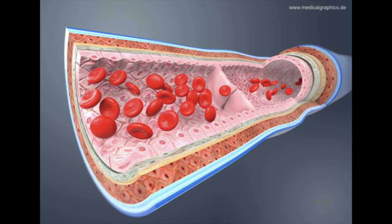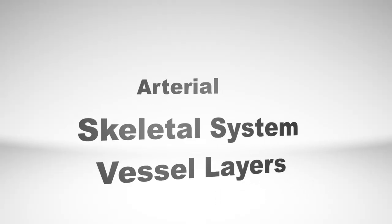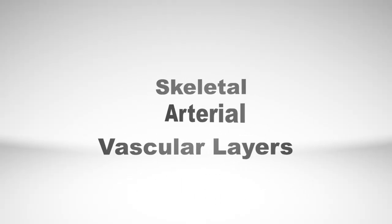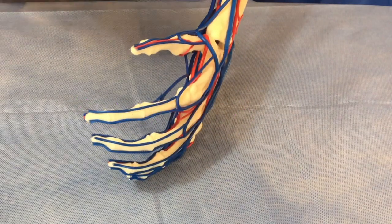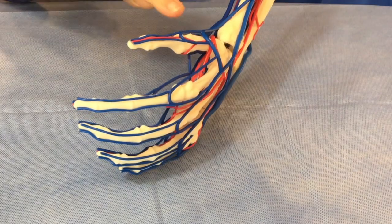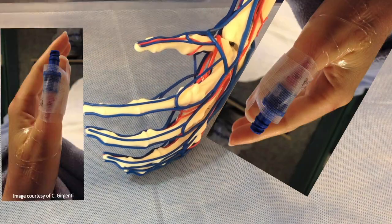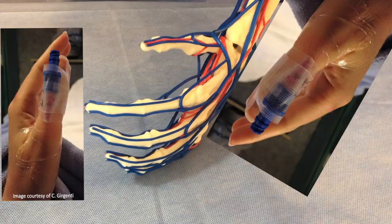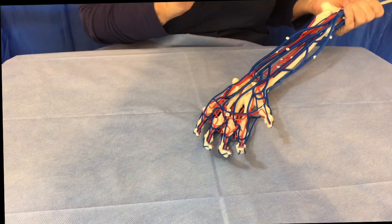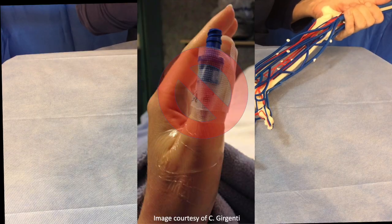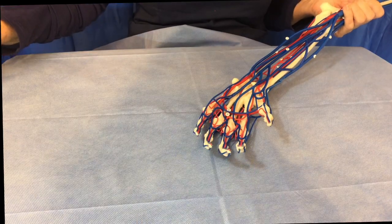Understanding the basics of the vascular anatomy and how each layer impacts your vascular procedures is crucial for safe practice. We've discussed the skeletal system, the arterial system, and the structure of our vessels. Now we're going to get right into the venous system. We're not going to cover the veins of the thumb or fingers — because we don't want you to place an IV there.